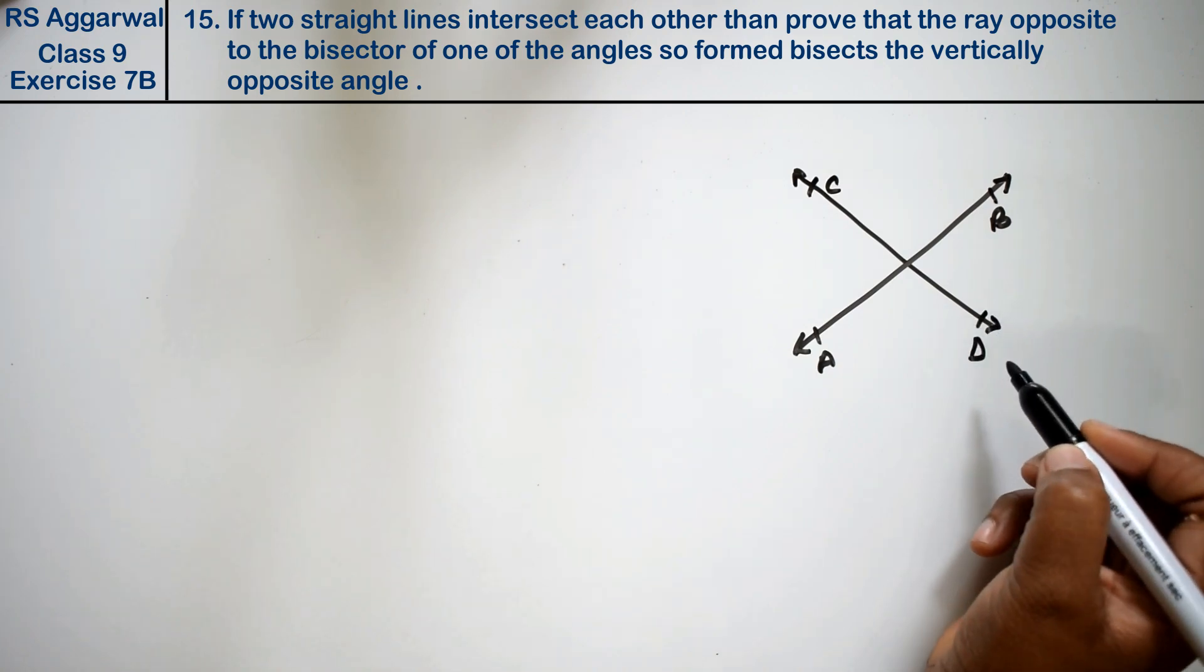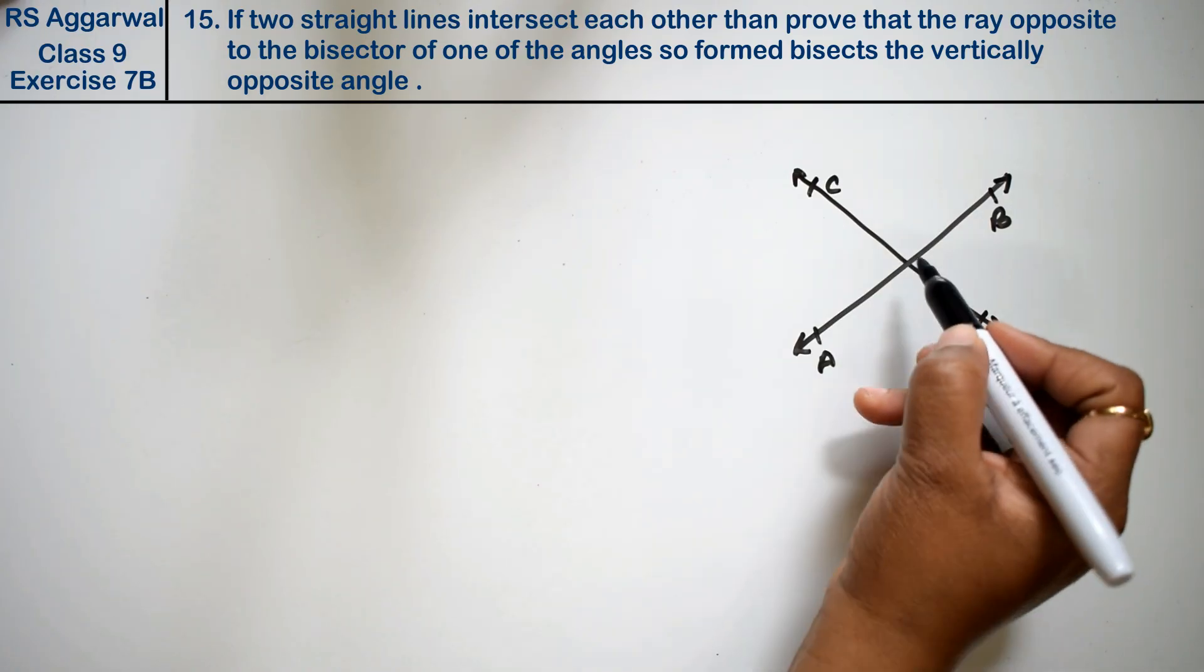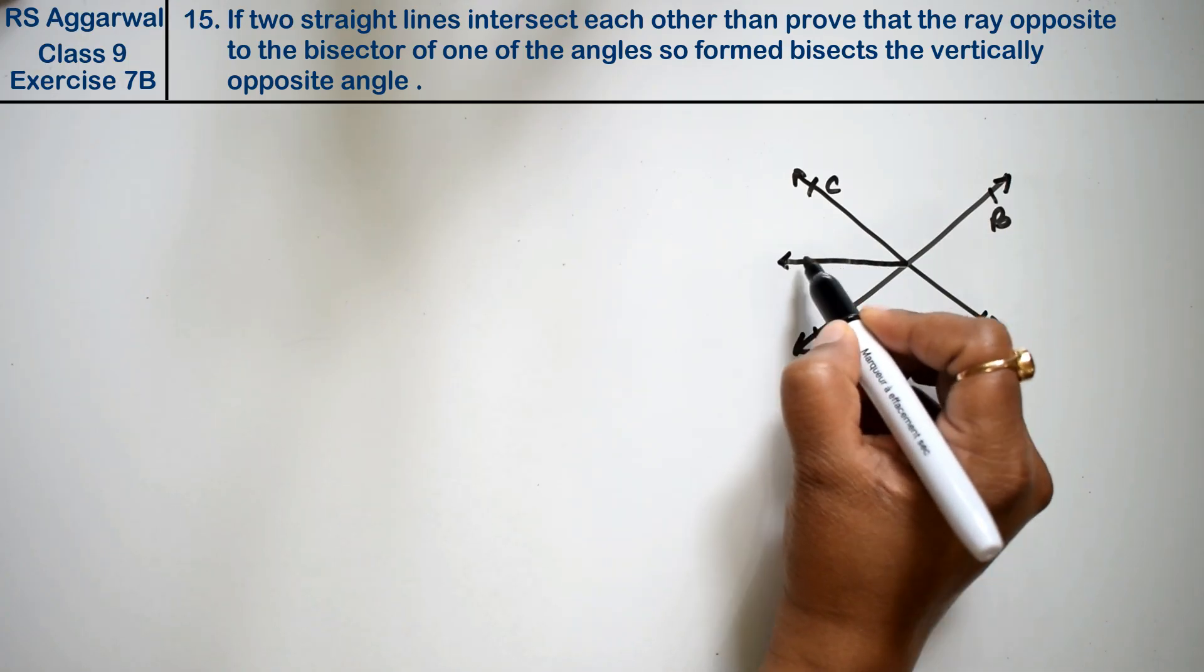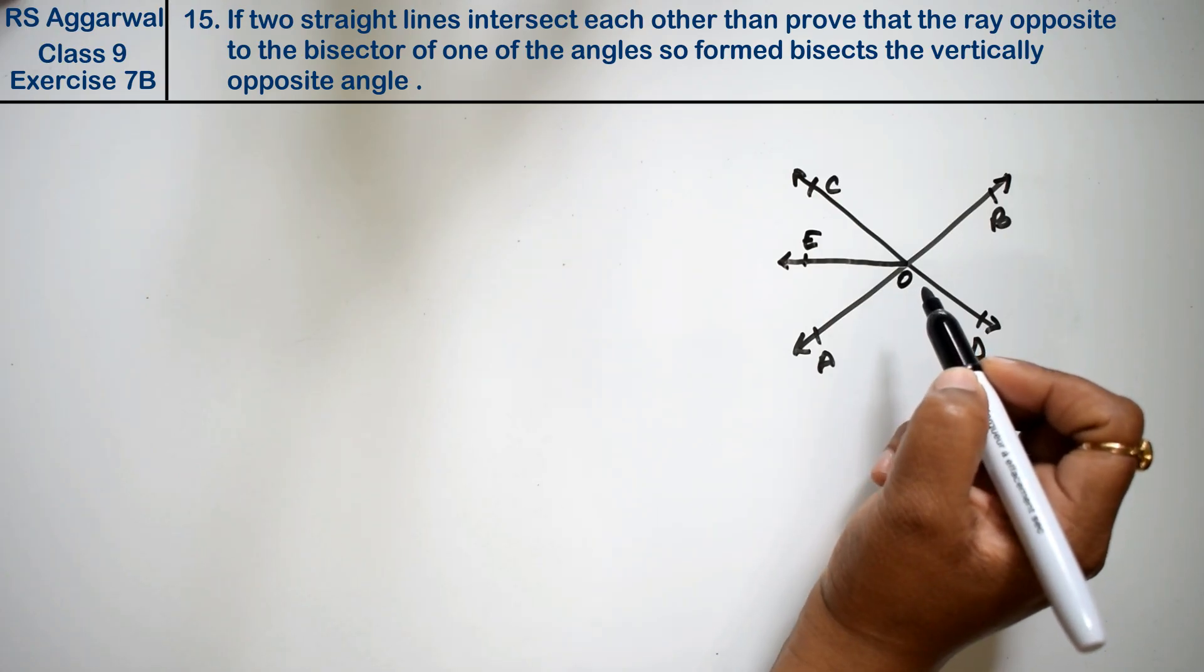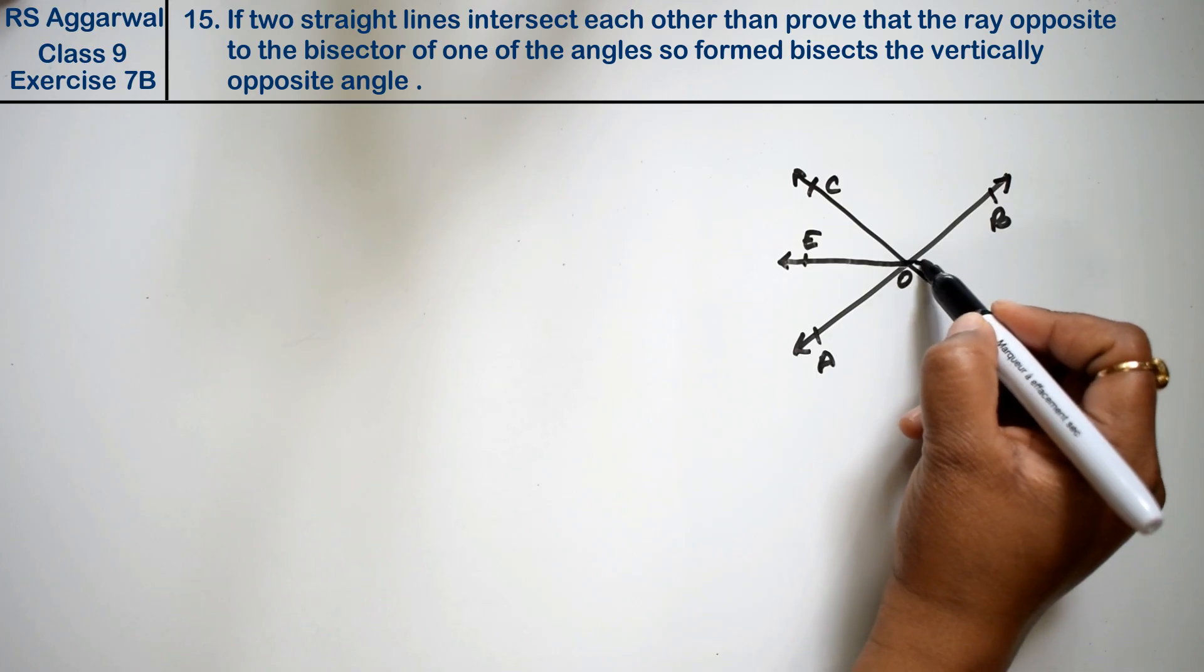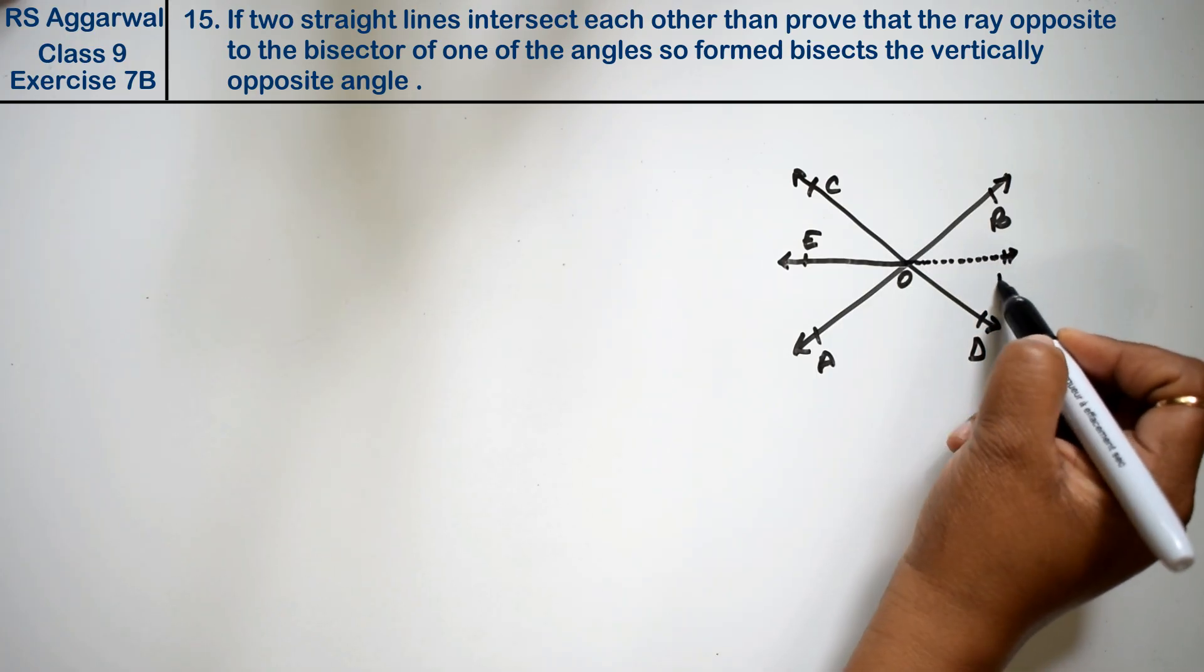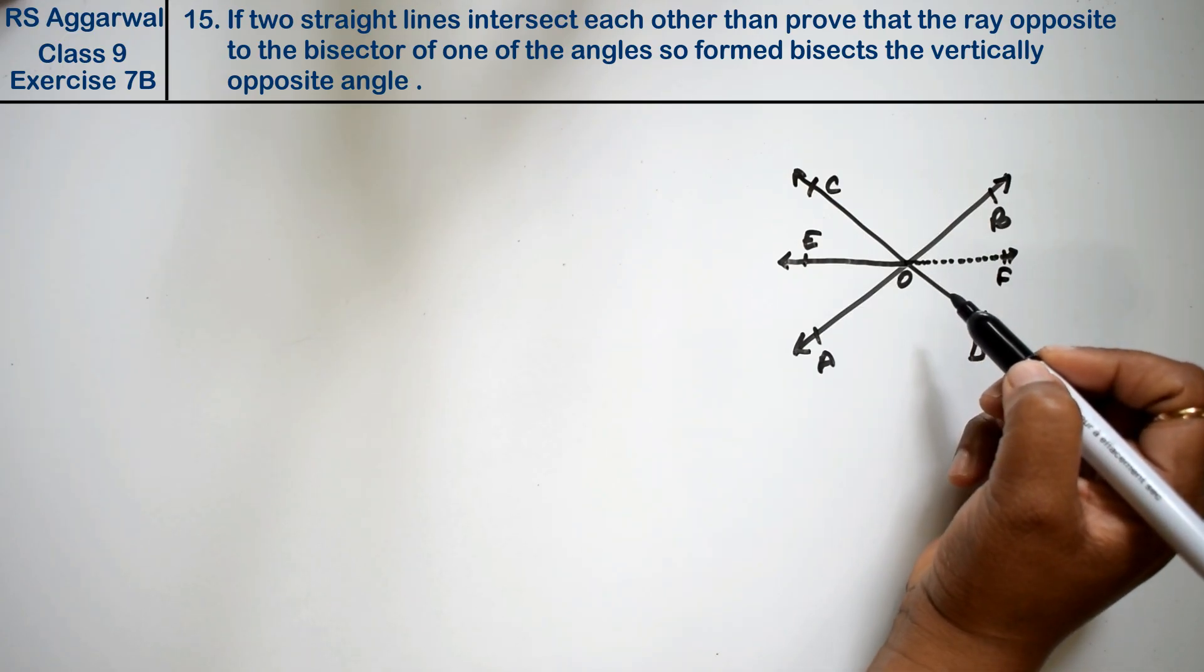Two lines intersect. What are we saying? Then prove that the ray opposite to the bisector of one of the angles... A ray is bisecting the angle, that is E, this is O point. So, OE bisects the vertically opposite angles. When the ray is extended, then it will be bisecting this angle. That is what we want to say. So we have to prove this.